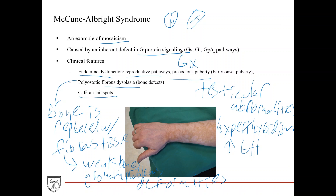A skin lesion seen in McCune-Albright is called cafe au lait spots, which have a coffee color to them. Specifically for McCune-Albright syndrome, the cafe au lait spots have the characteristic of a jagged 'coast of Maine' border rather than a smooth surface. They also typically do not cross the midline — if a person has spots on their right arm, they're not likely to cross over to the left side. In summary, it's an inherent defect in G-protein signaling; depending on which cell population is affected, patients can have endocrine dysfunction, skeletal dysfunction, or cafe au lait spots.